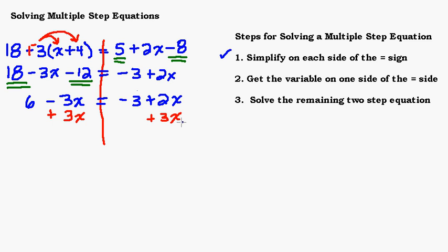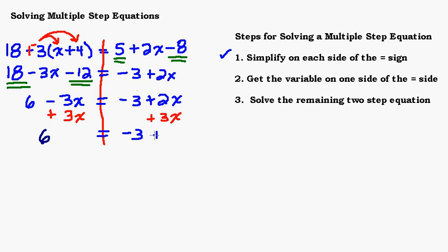Adding 3x to both sides: the 6 comes down, the negative 3x terms cancel to zero, so we just write 6. Bringing down the equal sign, on the right hand side I bring down negative 3 and have 2x plus 3x, which is 5x.